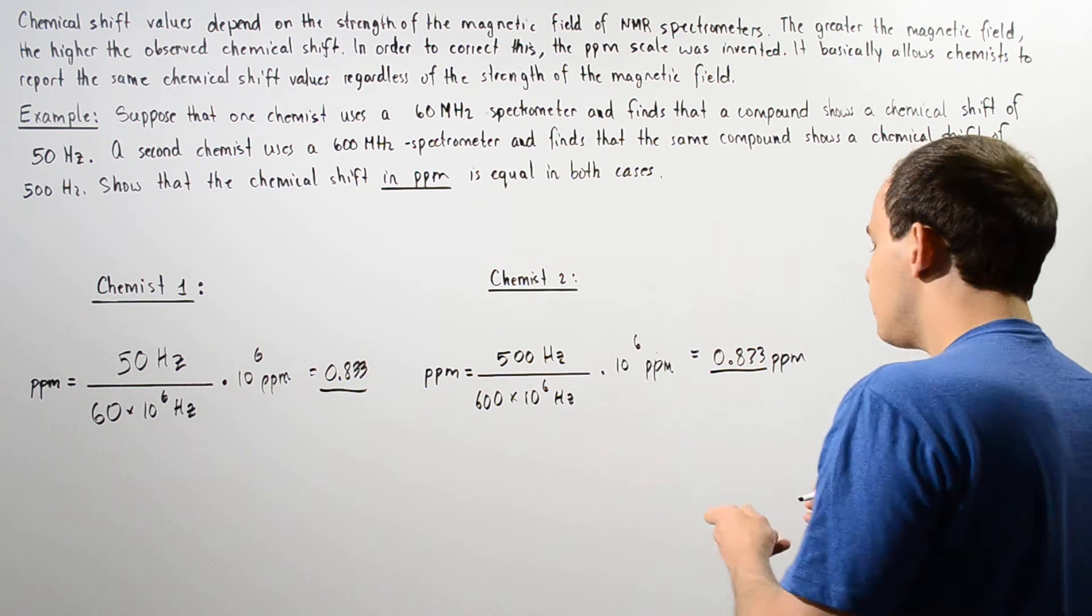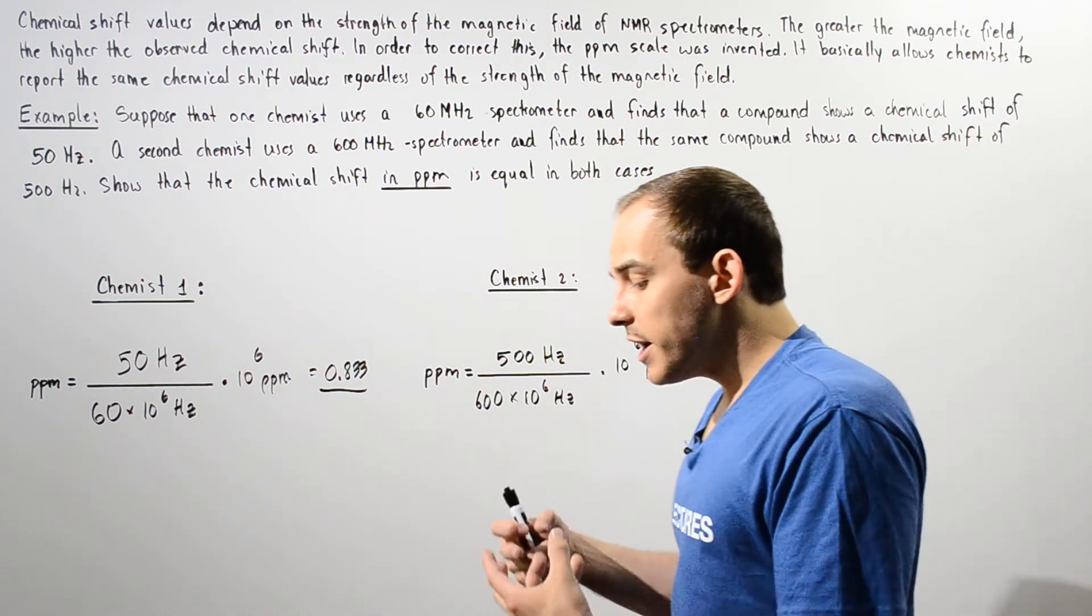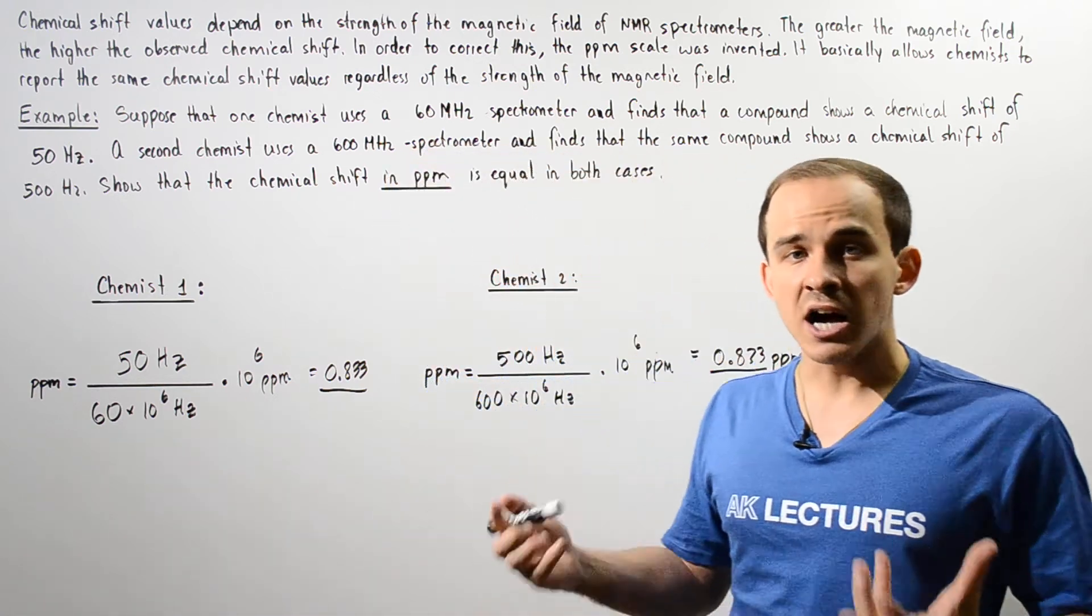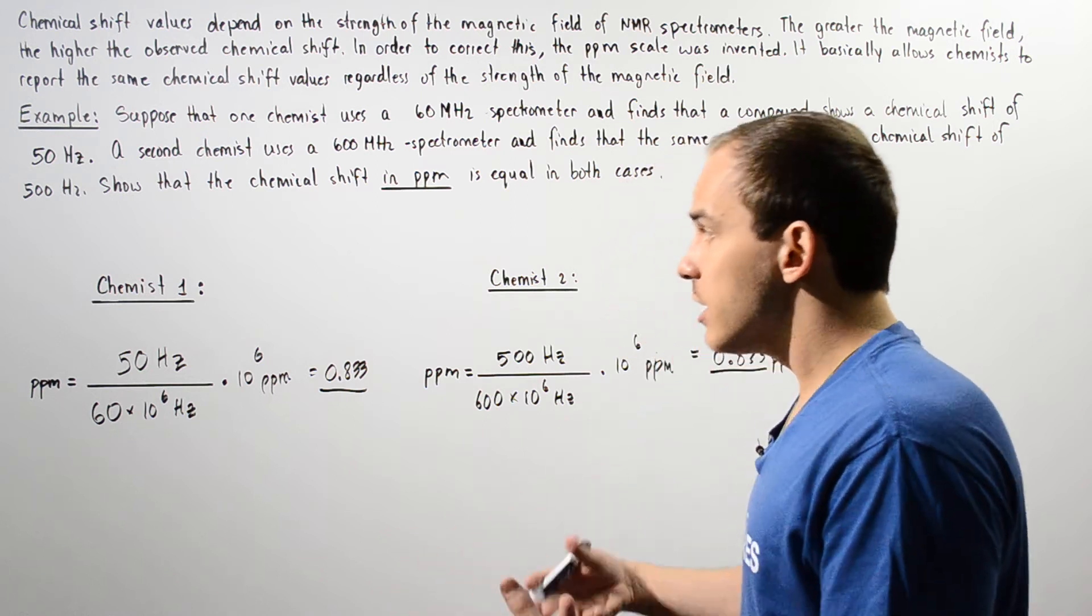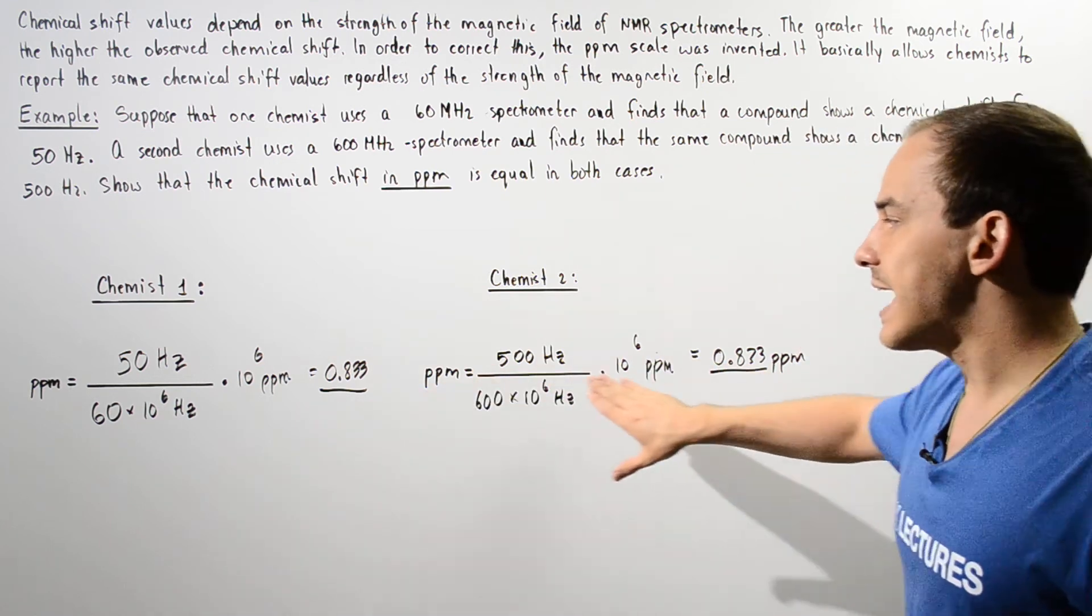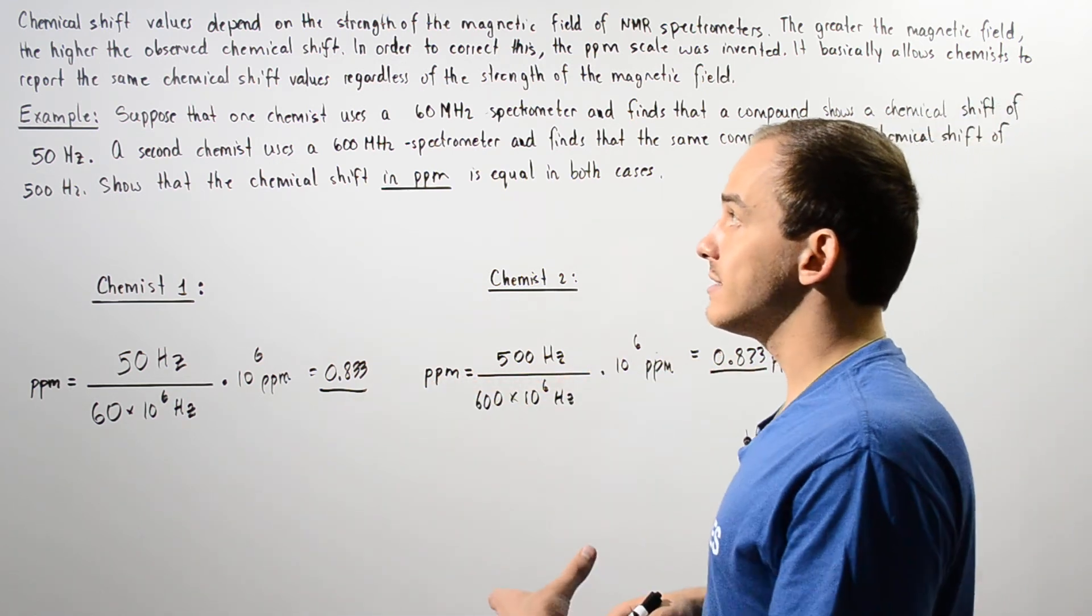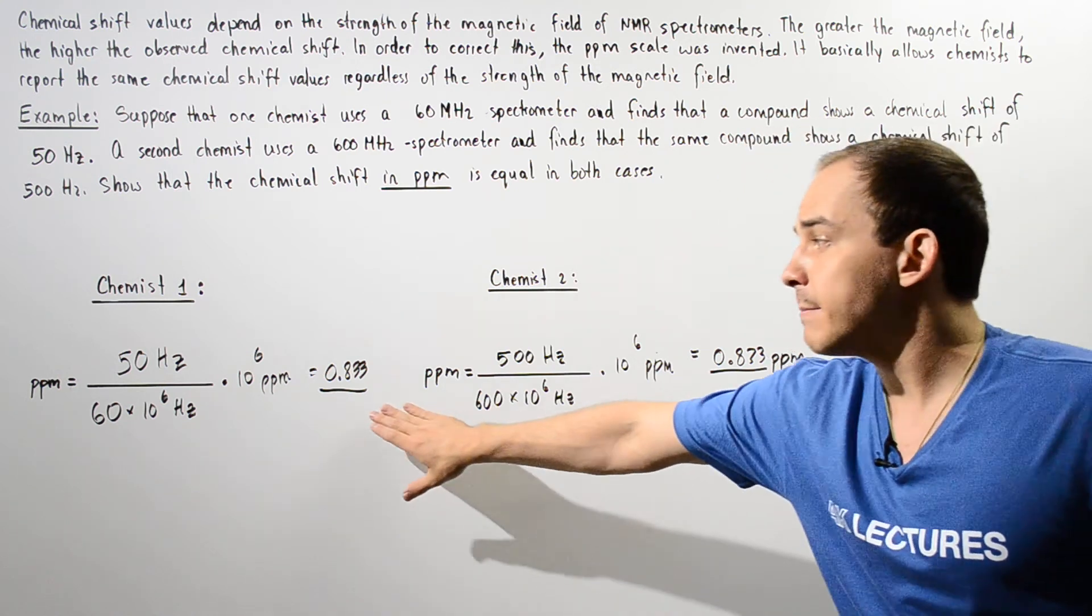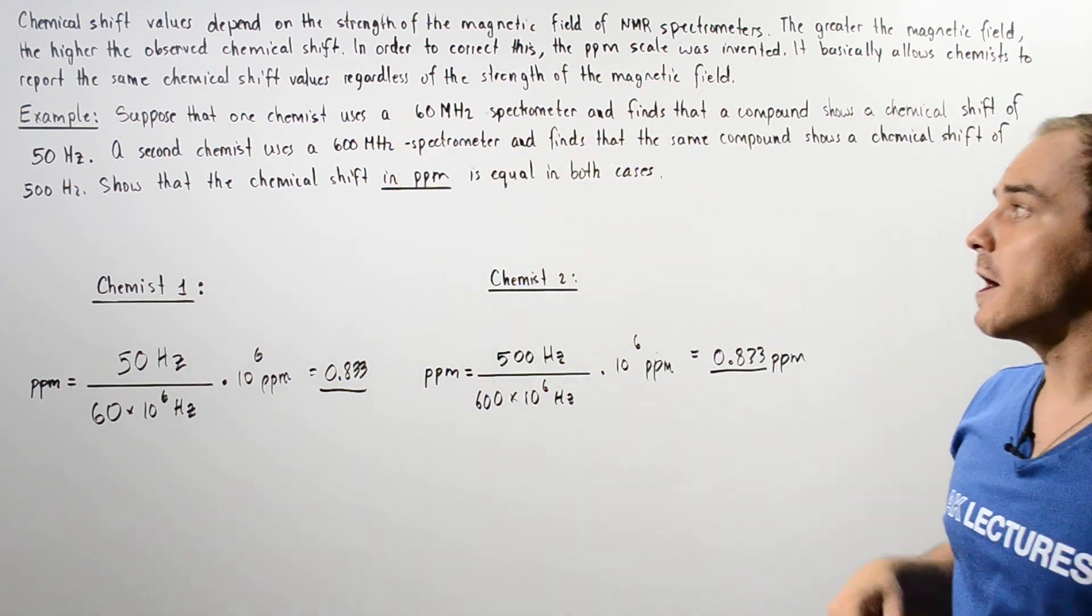So we see that in both cases, our ppm value is exactly the same. And that makes sense because we're using the same exact compound. If we use the same exact compound, it makes sense that the spectrometer should give us the same exact chemical shift value in ppm. And that's exactly why we use ppm in the first place. It basically allows scientists or chemists to report the same chemical shift values regardless of the strength of our magnetic field of that particular proton NMR spectrometer.